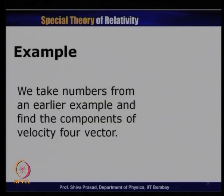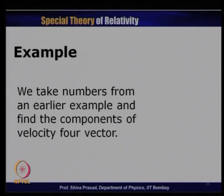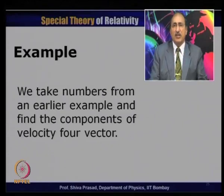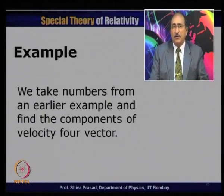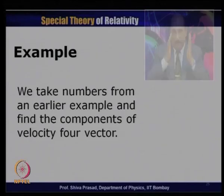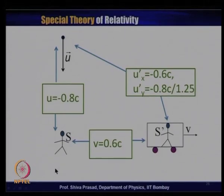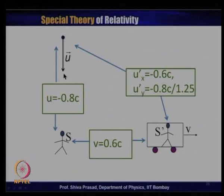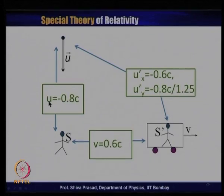Let us take a numerical example using numbers from our last lecture. A particle falls vertically, observed in frame S with velocity uy = -0.8c (all other components zero). Frame S' moves with relative velocity v = 0.6c with respect to S. From velocity transformation, the particle has ux' = -0.6c and uy' = -0.8c/1.25 in frame S'.